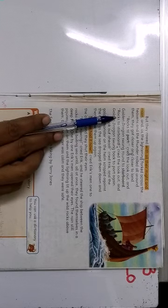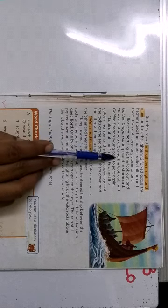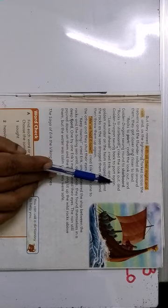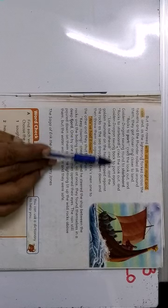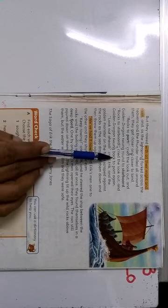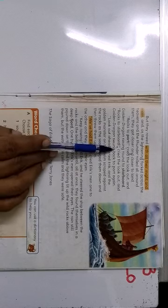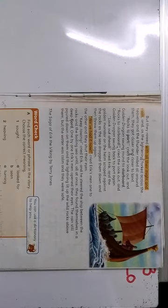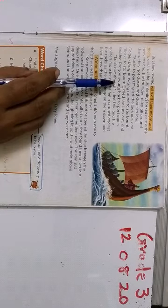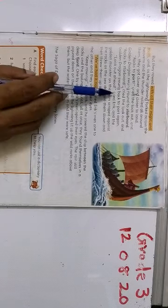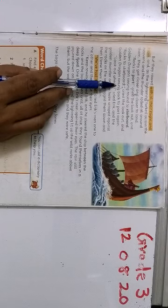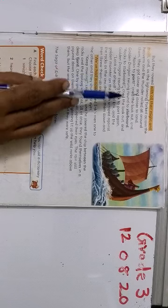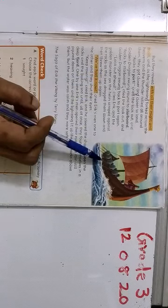Now we move to the next line. Rocks to starboard cried the lookout, and golden dragon swung back to port again. So this they are describing how the journey is, how they are finding it difficult to move this ship, this boat. Now children, swung. You put there number 9. Swung back to port again. Swung is children, it is the past tense, the past participle of swing. Here it means moving front, back, sideways. Can you see? Because of the rough weather.